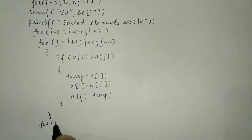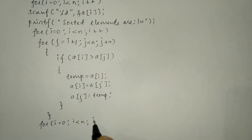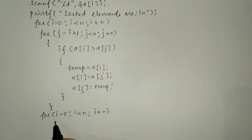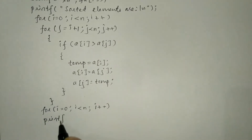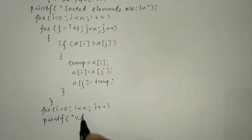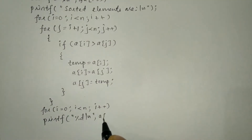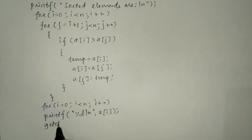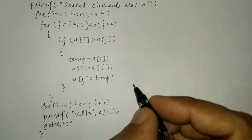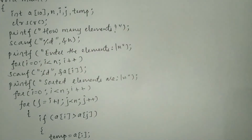Next we write another for loop: for i equals zero, i less than n, i plus plus — to print the sorted elements using printf with %d and a newline, printing a[i]. Finally, we write the getch function and the closing curly brace for main.